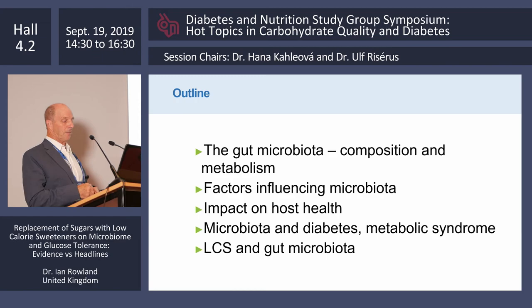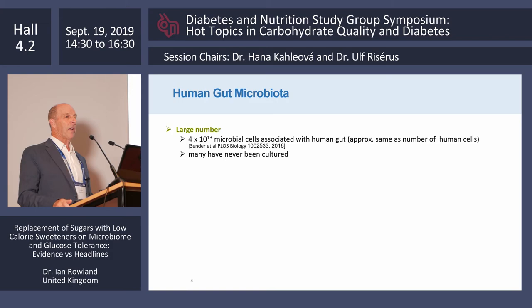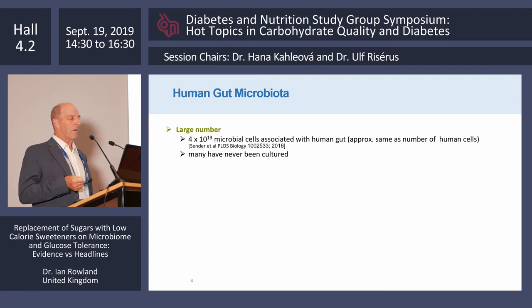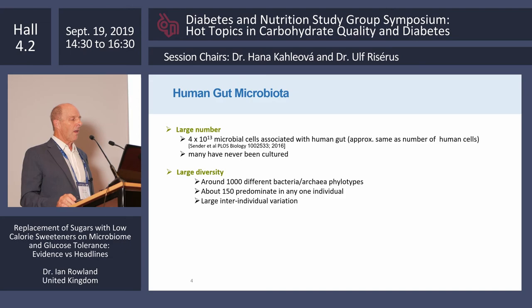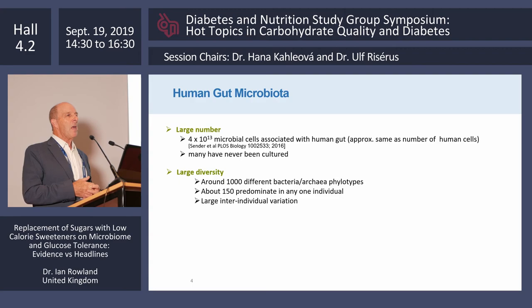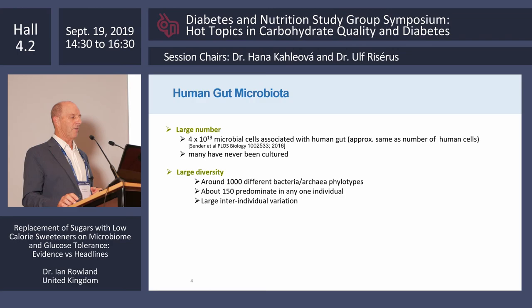The human gut microbiota has huge numbers of bacteria — around 4×10¹³ microbial cells. We are about 50% human and 50% microbial. Many of these types of bacteria have never been cultured. As well as having huge numbers, there's an enormous diversity, with around 1,000 different bacterial and archaeal phylotypes, though each individual harbors only about 150 of these. There is also enormous inter-individual variation in gut microbiota.